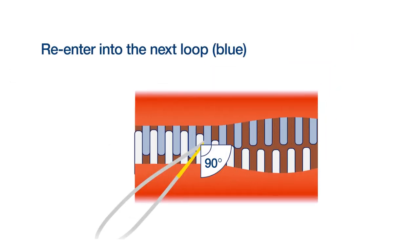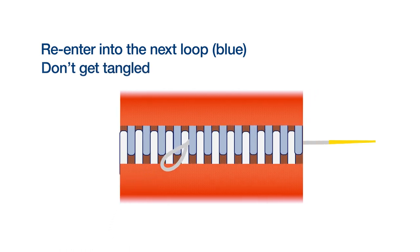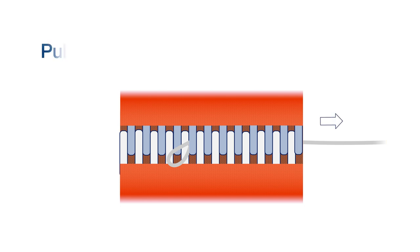Re-enter the seam without missing a loop and continue to seam the fabric. When pulling the remaining mono through the seam, be careful not to get tangled. When the remaining loop is small enough, quickly pull the loop so that it enters the seam without twisting.